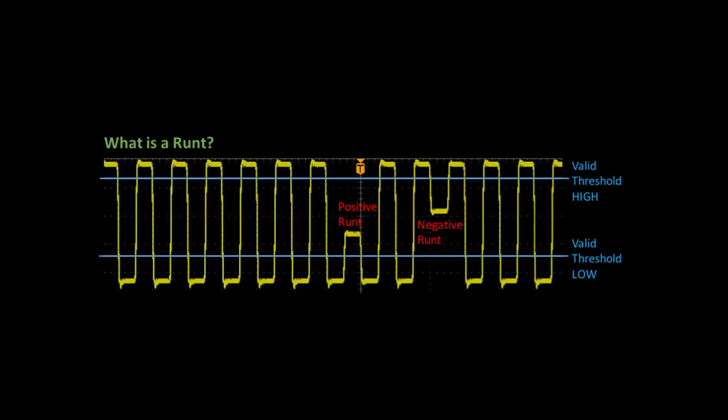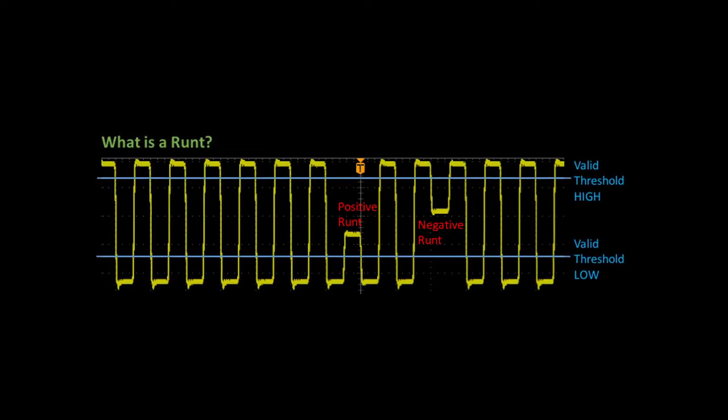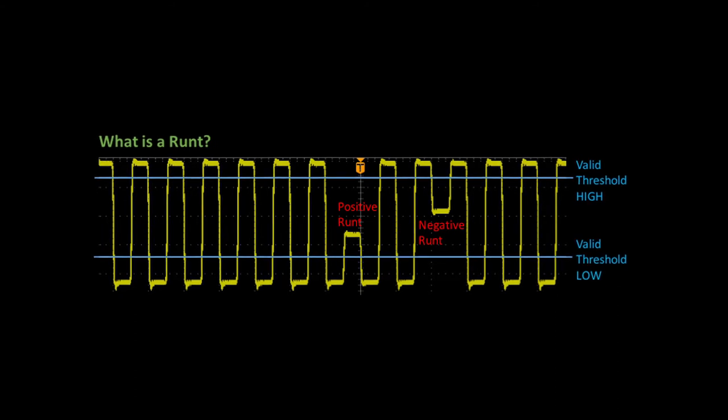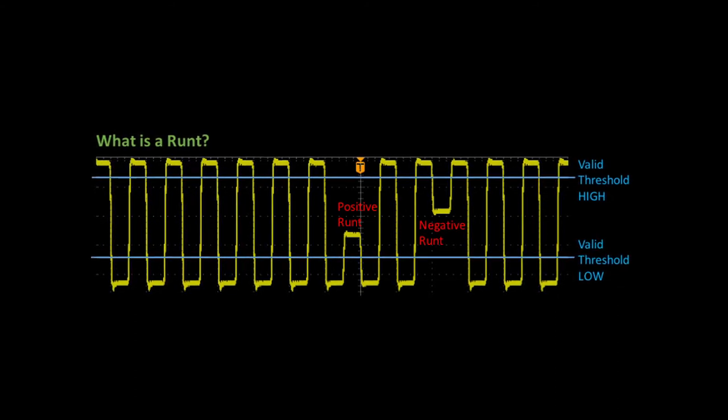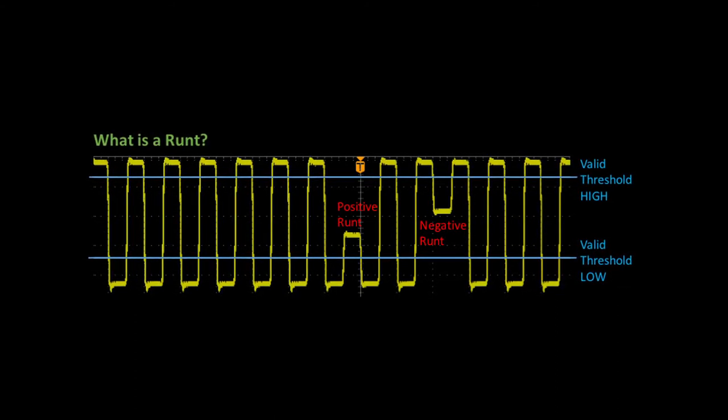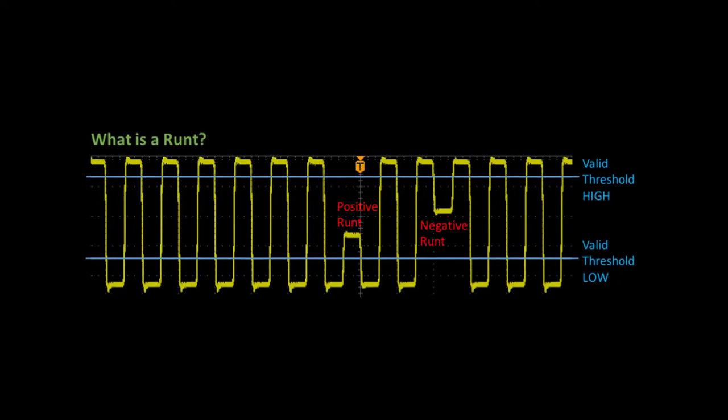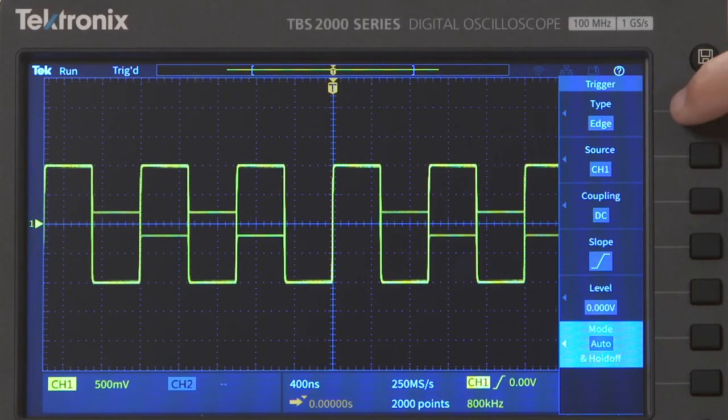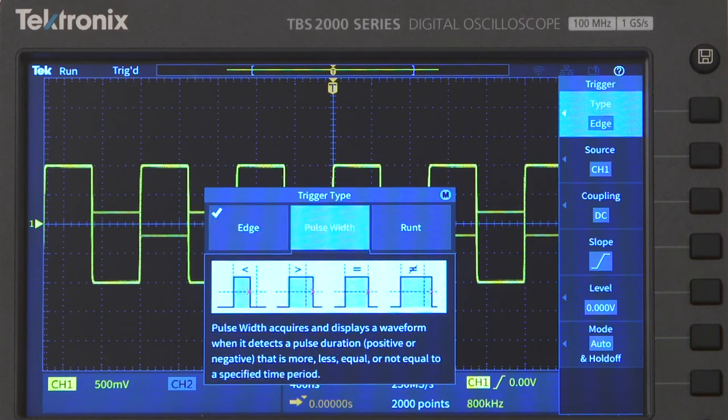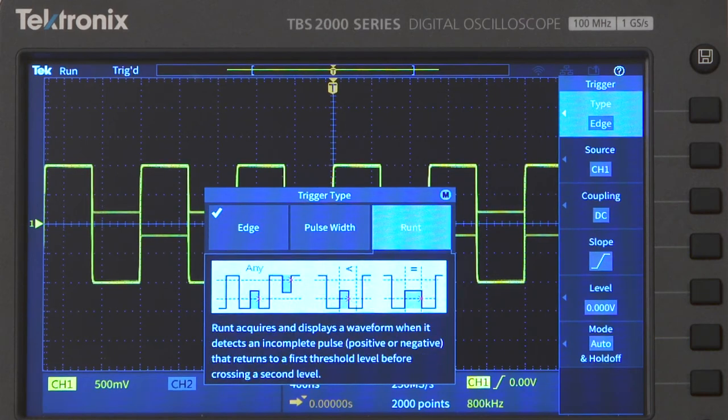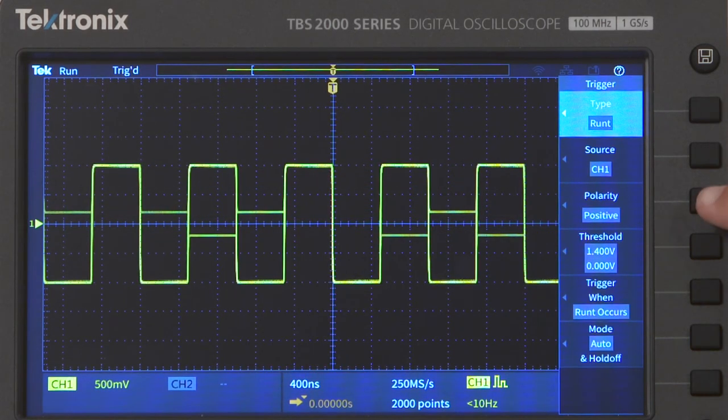Pulse width and edge triggering can't single out runts. Runt triggering uses two thresholds, and it looks for pulses that pass through one threshold, but not the other. For runt trigger type, you need to specify the polarity of the pulse you're looking for, the two threshold levels, and whether you want the scope to trigger on any runt, or on a runt of a particular width.